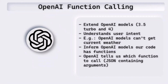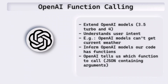For example, if we ask OpenAI to get the current weather, OpenAI comes back saying it doesn't have access to the current weather because it's been trained until September 2021. However, if we tell OpenAI that our code has functions which can give information about the current weather, then OpenAI tells us which function to call with certain parameters. We go ahead and call that function and then send the response back to OpenAI.